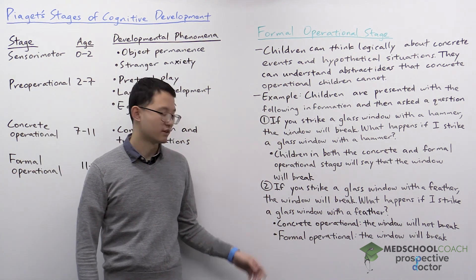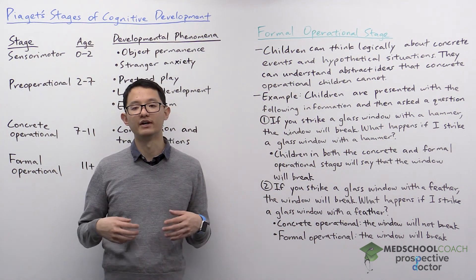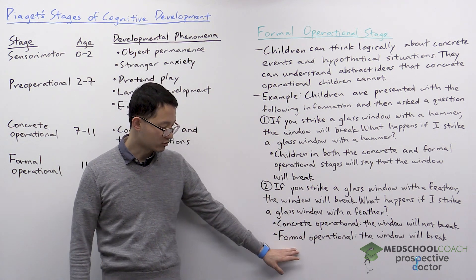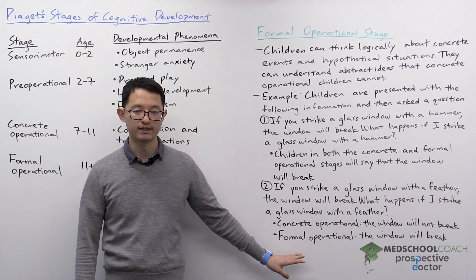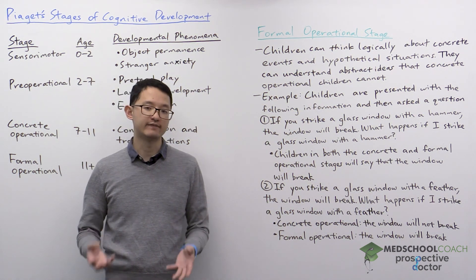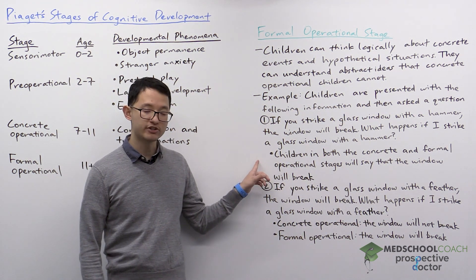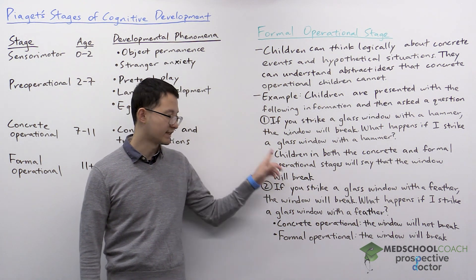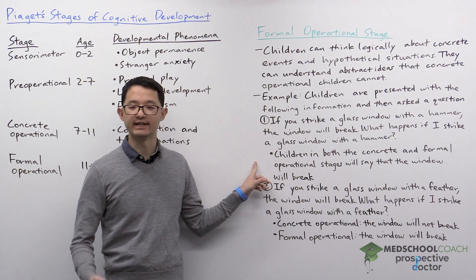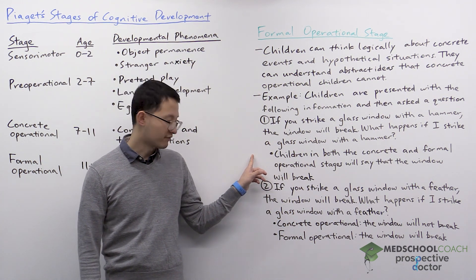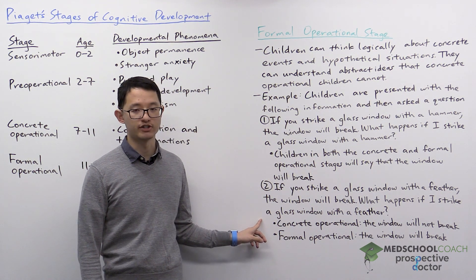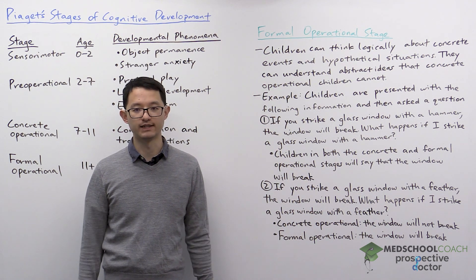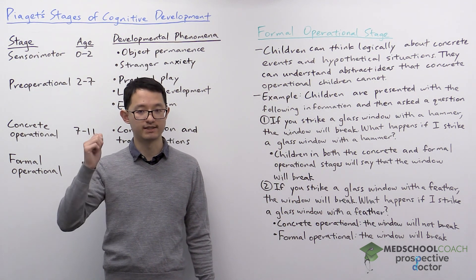However, children in the formal operational stage are capable of understanding hypothetical situations and abstract logic, so they will correctly respond that the window will break. The key difference is that children in the concrete operational stage can only understand concrete, real events — they understand that a hammer is heavy and strong and can break a glass window. But when presented with a hypothetical situation, they can't understand it if it doesn't match their real-world understanding of the object, in this case, a feather.